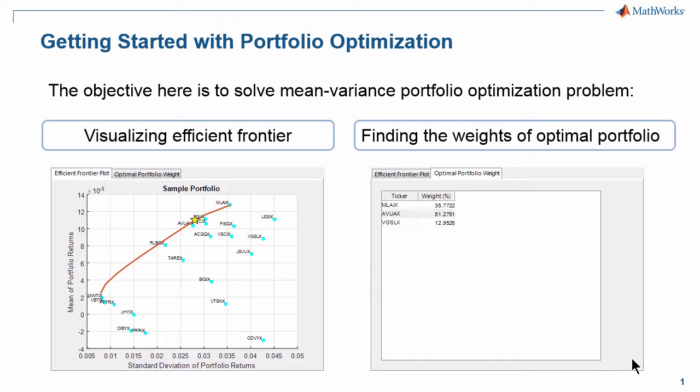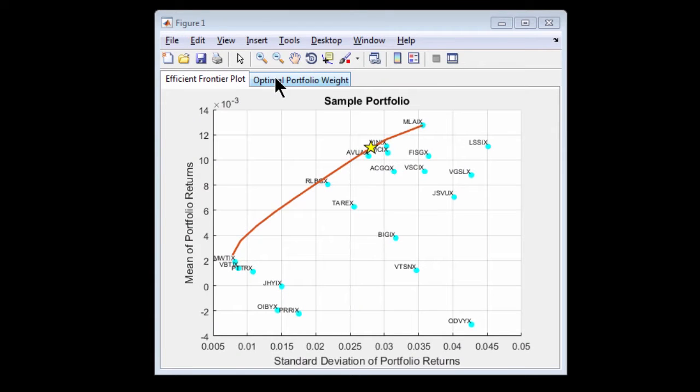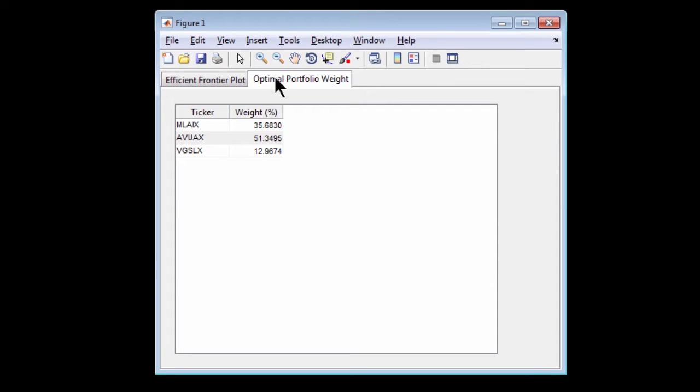In this video we're going to talk about portfolio optimization. The problem exists because we want to find the best investment based on our risk preference and investment constraints. The objective here is to solve mean variance portfolio optimization problems, which includes visualizing efficient frontier and finding the weights of optimal portfolio.